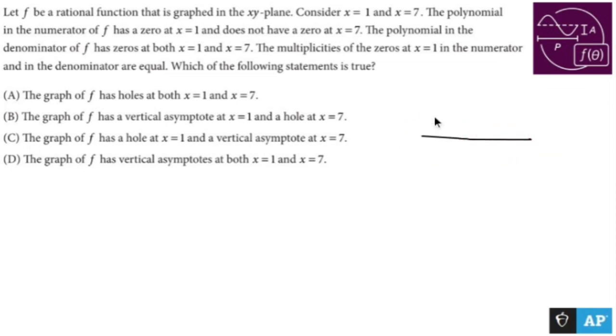So let's draw a little rough draft out. It has a zero at x equals 1, which means there's a factor of x minus 1, and it does not have a zero at x equals 7, which means I'm not going to have x minus 7 up there. Very good.